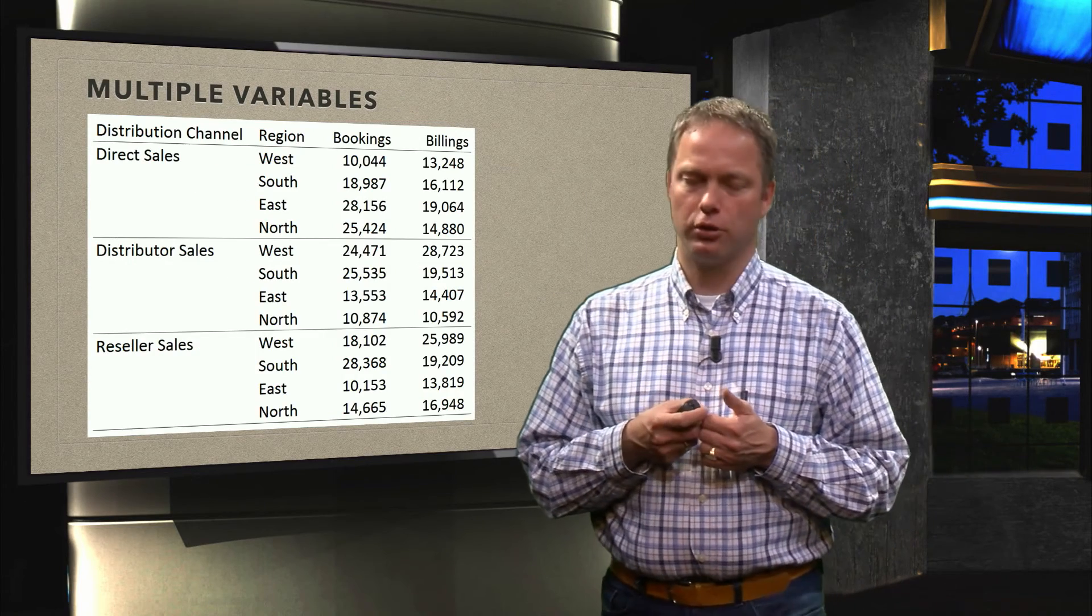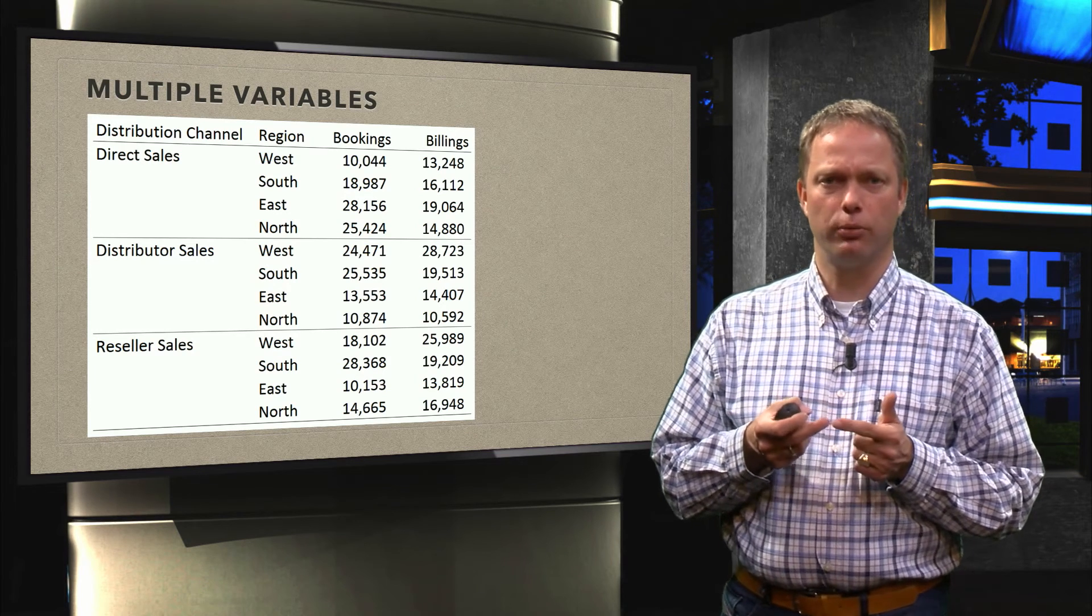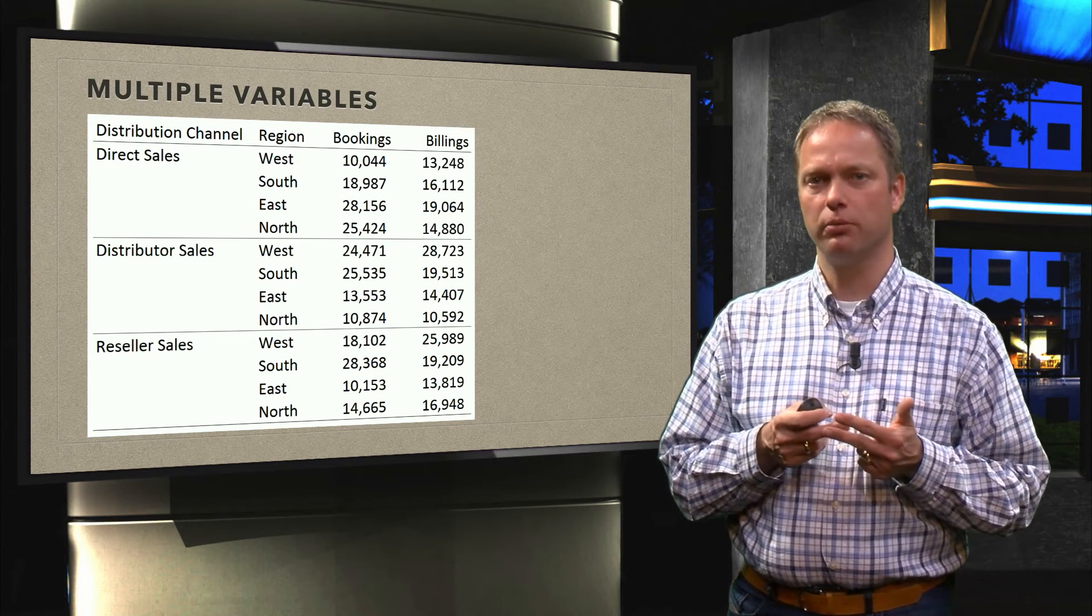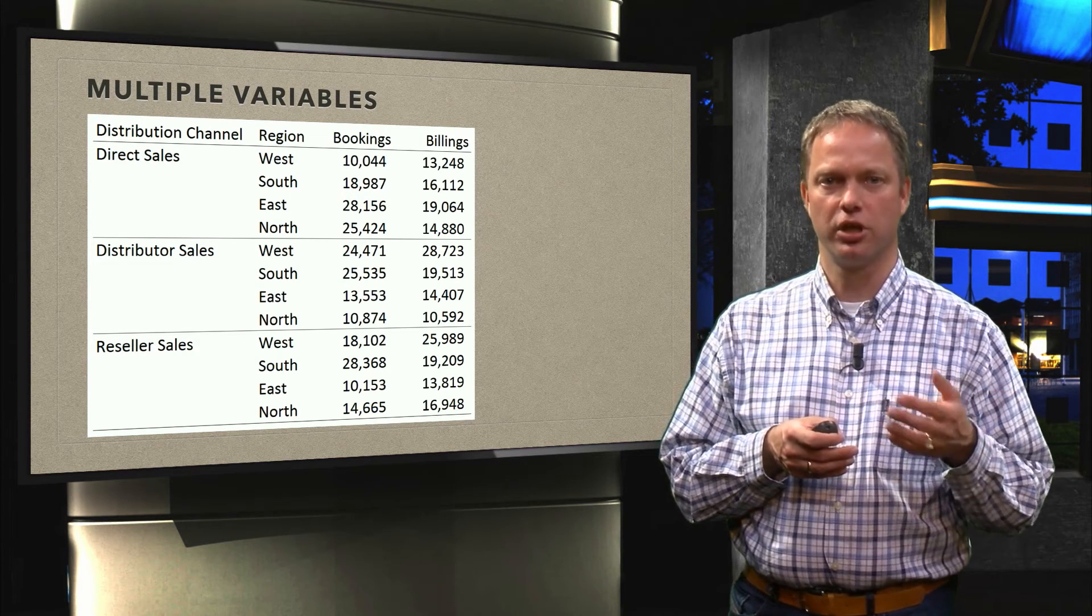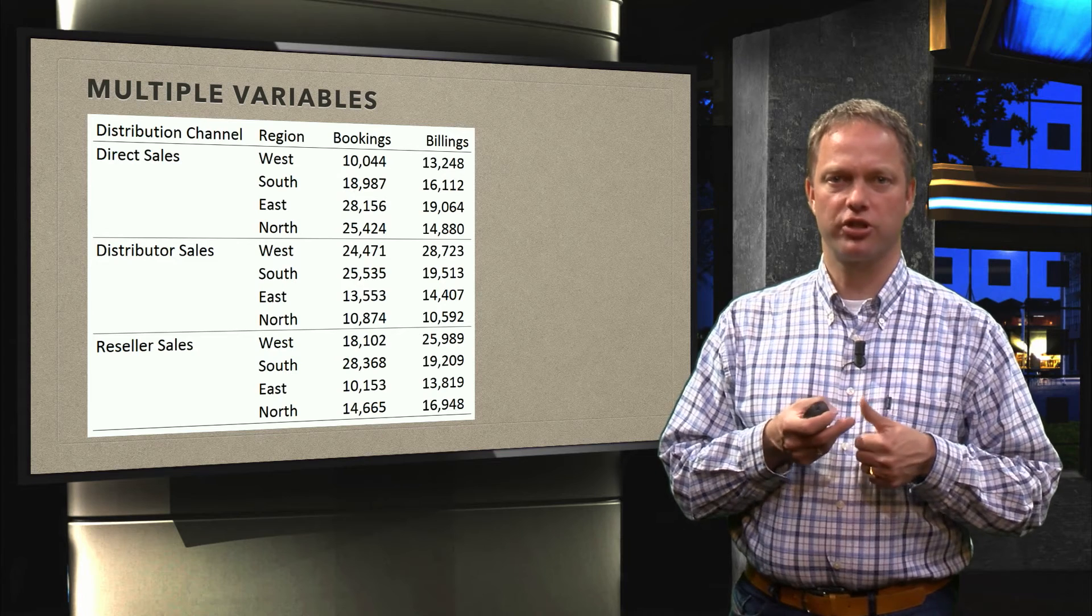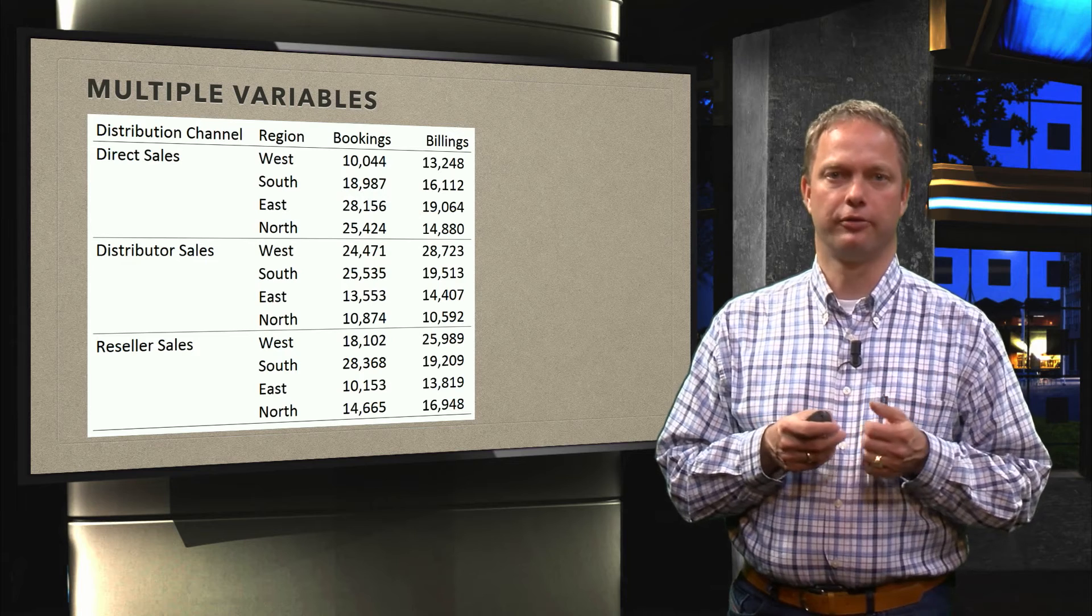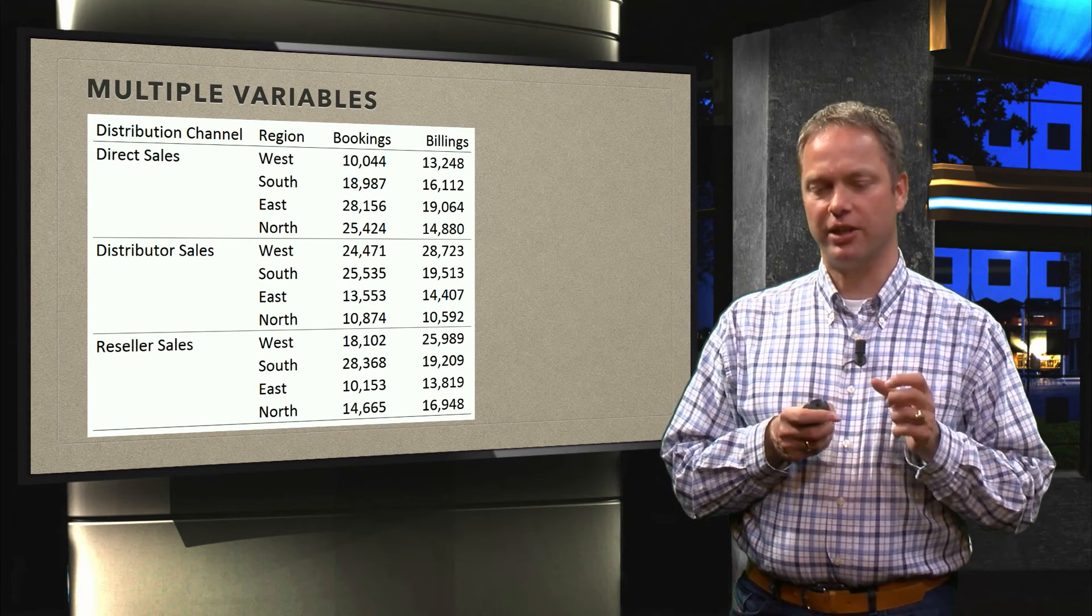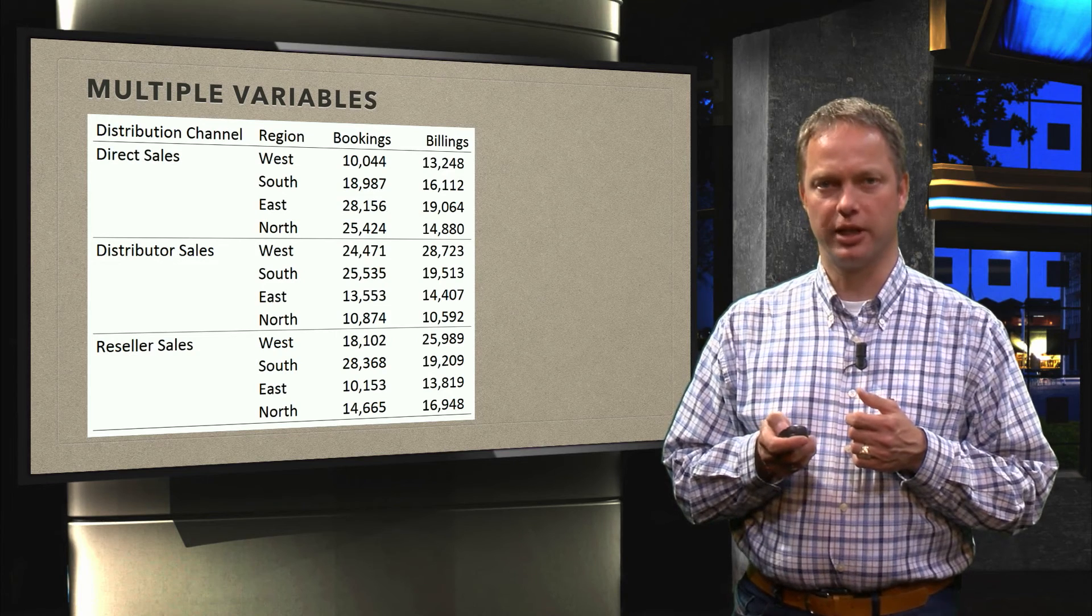Now what could that other solution be? Here we have a table. We now know this is a unidirectional table with a hierarchical presentation of two categories, namely the distribution channel and the region. And there is quite some information going on here. I have a distribution channel, direct sales, distributor sales, reseller sales. I have the four regions, I have the bookings, the orders that I got in, and I have the billings. And I want to represent somehow this in a graph. But that is too much data to put in a single graph. What you could do, instead of creating one graph, is creating several smaller graphs. And I have an example for that over here.